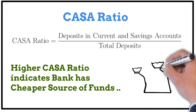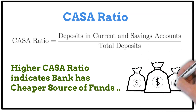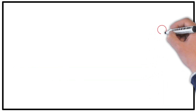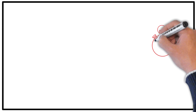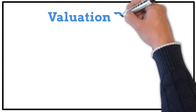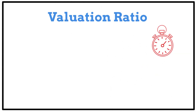When banks have a cheap source of funds, they have a lot of profits, and as an investor we can expect higher returns. With lower cost of deposits, the bank pays less to depositors, and when loans are given out they generate more income, reducing the risk of NPA. Looking at these three ratios together gives us a clearer picture of the bank's financial health.